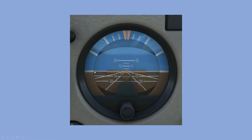The line running across the center of the attitude indicator represents the Earth's horizon, or 0 degrees of aircraft pitch. Aircraft pitch up is marked in 5, 10, 15, and 20 degrees, and aircraft pitch down is marked in 10 and 20 degrees. The knob at the bottom is used to adjust the aircraft symbol up and down, but Flight Simulator boots this up well calibrated so you shouldn't need to use that. When the attitude indicator fails, a small red flag drops down from the left-hand side to indicate its failed state.